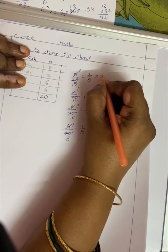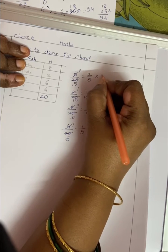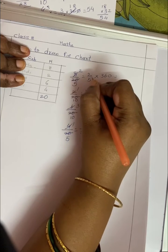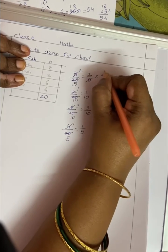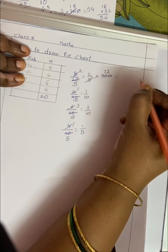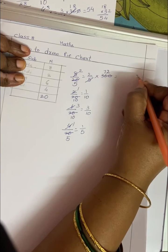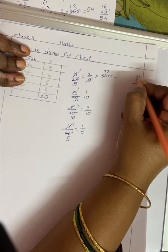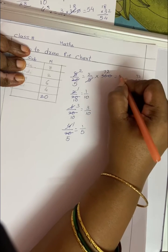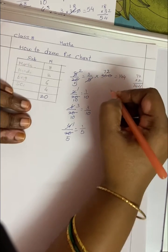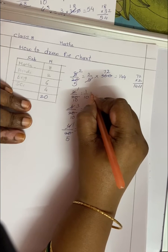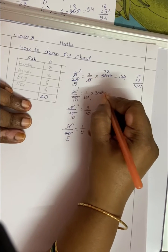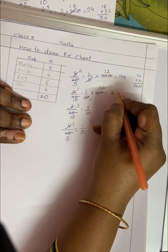The circle means 360 degrees, so we have to multiply each fraction by 360 degrees. 2 by 5 into 360: 5 ones are 5, 5 seventies are 72, into 2 gives 144 degrees. Next, 1 by 10 into 360 gives 36 degrees.